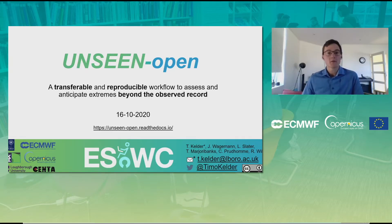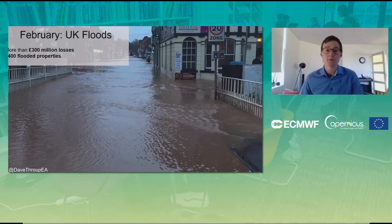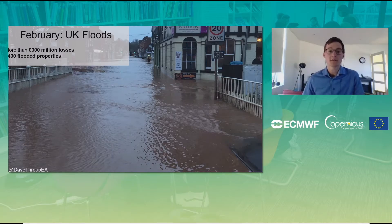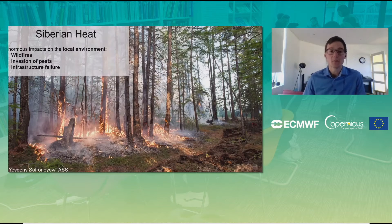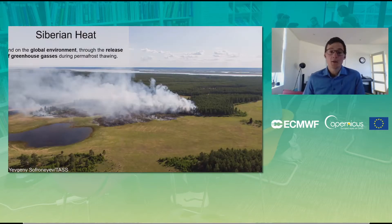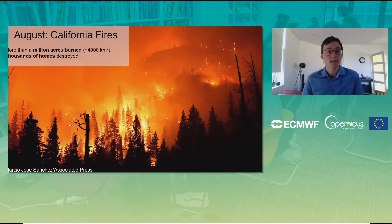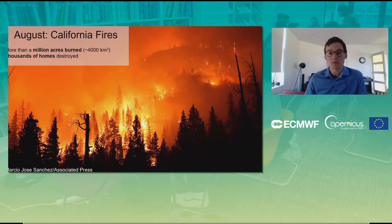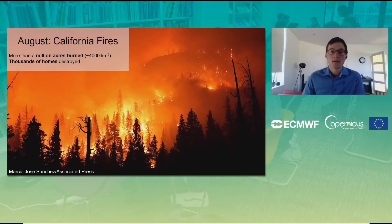We've been creating an open workflow to assess climate extremes. The relevance of this project is very clear. For example, at the beginning of this year in February, we saw floods in the UK with more than 300 million in losses and 3,400 flooded properties. Later in the year, we saw a heatwave over Siberia with enormous impacts — causing wildfires, invasion of pests, and infrastructure failure — also impacting the global environment through greenhouse gas release during permafrost thawing. More recently in August, we saw Californian fires with more than a million acres burned and thousands of homes destroyed. These events are unprecedented, making it hard to assess their frequency of occurrence — you would need more data.